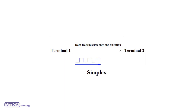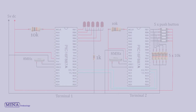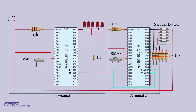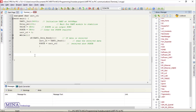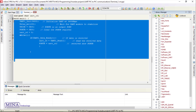In simplex transmission, data is transmitted in only one direction — data will be transmitted from terminal one to terminal two, or terminal two to terminal one. This is our circuit schematic. It has two parts: one for transmitting data and one for receiving data. We have connected five LEDs with the receiver and five push buttons with the sender.